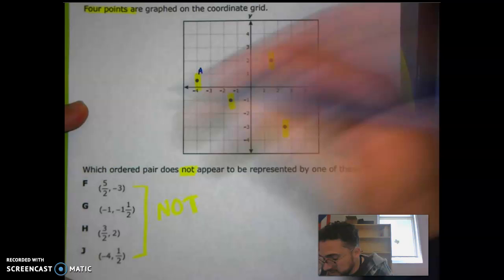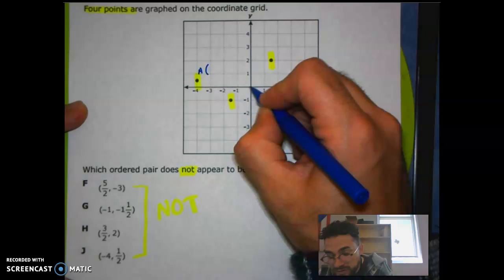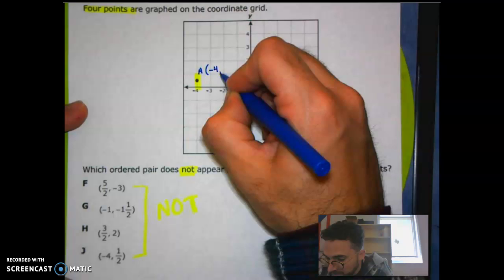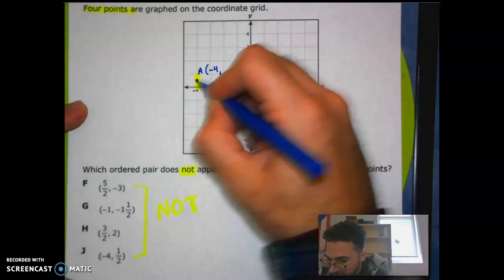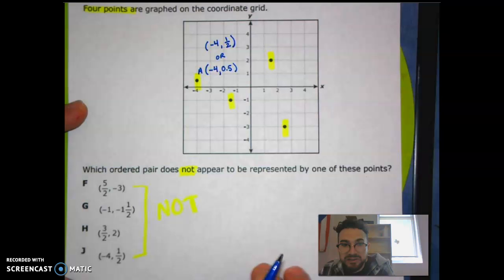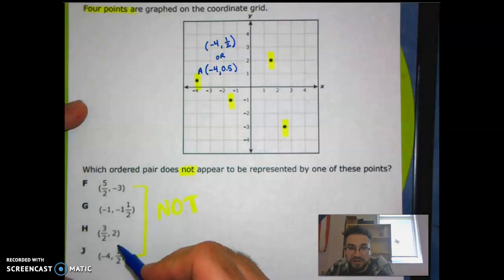There's a couple ways you can do this. One is you can come up here and write the coordinates for each point on the graph and then compare what you wrote to what's down here. For example, this point right here, I'm just going to label this A for the sake of explanation. If I start at my origin first, moving on my x-axis first, I'm moving to the left, which makes it a negative value. My x is going to be negative four. My y, then I need to move up, which makes it positive, and I'm at about a half, so 0.5 or some of you need to recognize that a half can also be written as a fraction.